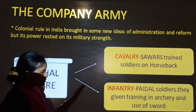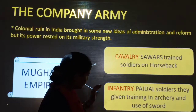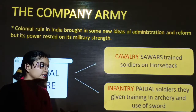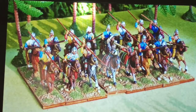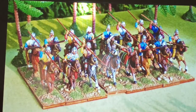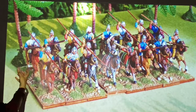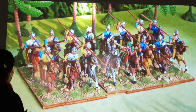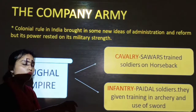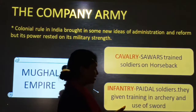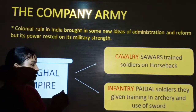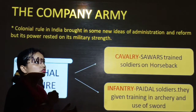There were two types of army. The first was cavalry and the second was infantry. Cavalry means 'sawaars' — trained soldiers on horseback. The Mughal Empire's army was a cavalry. They were given training in archery and use of the sword, meaning 'teer-andazi' and 'talwar-bazi'.